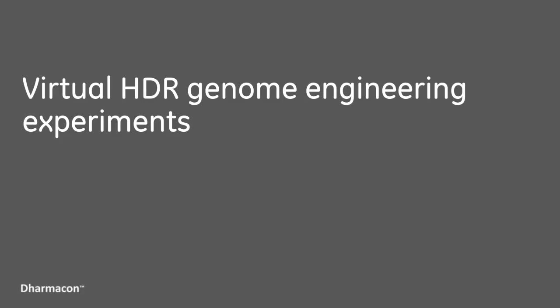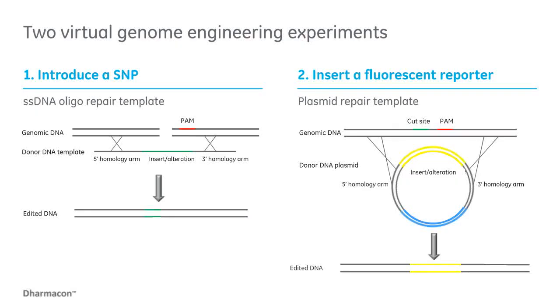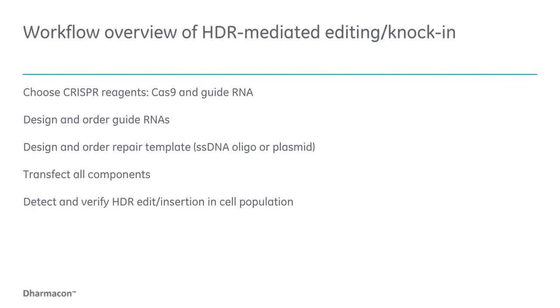The two virtual HDR genome engineering experiments we'll walk through today are: first, to introduce a SNP in our gene of interest using a single-stranded DNA oligo as a donor template; and second, to design a plasmid donor to knock in a fluorescent reporter in-frame with our gene of interest. The basic workflow starts with choosing the appropriate CRISPR reagents, designing guide RNAs for functionality in the region of HDR insertion, designing the repair template, co-transfecting Cas9, guide RNA, and repair template into cells, and finally detecting and verifying the intended genomic alteration.